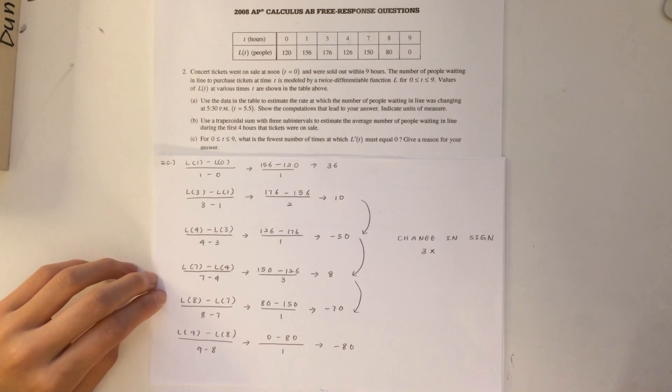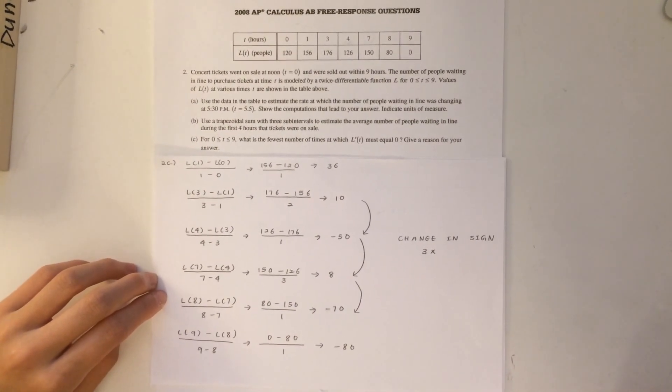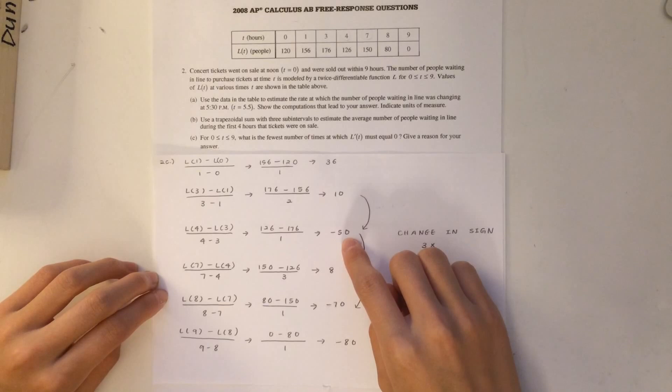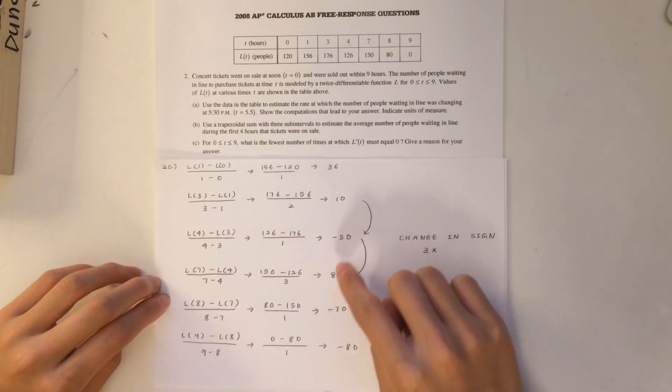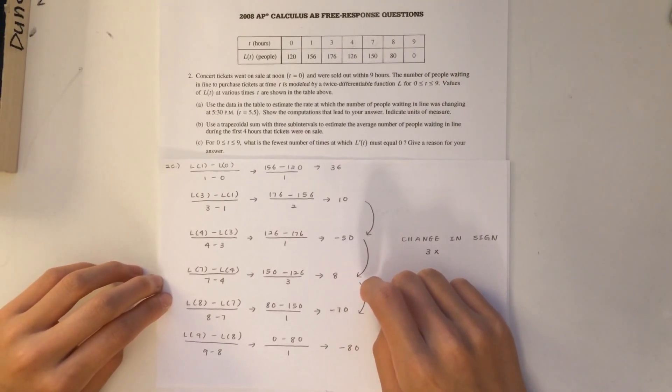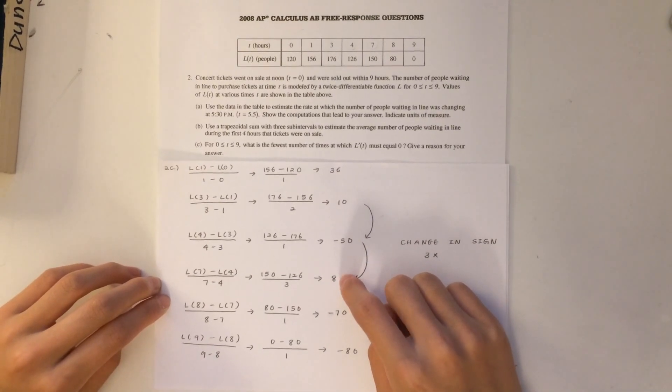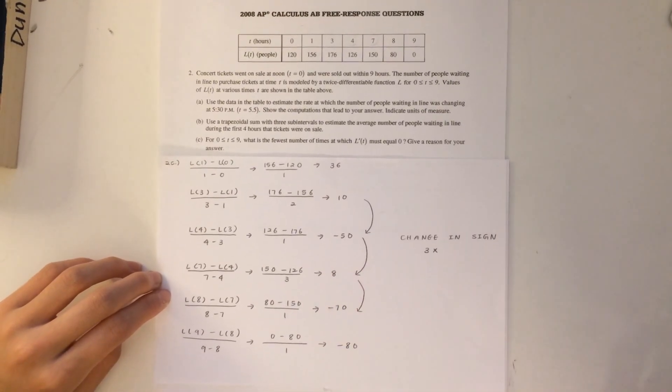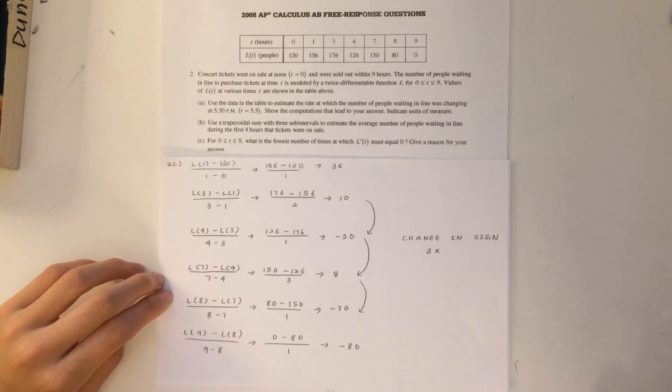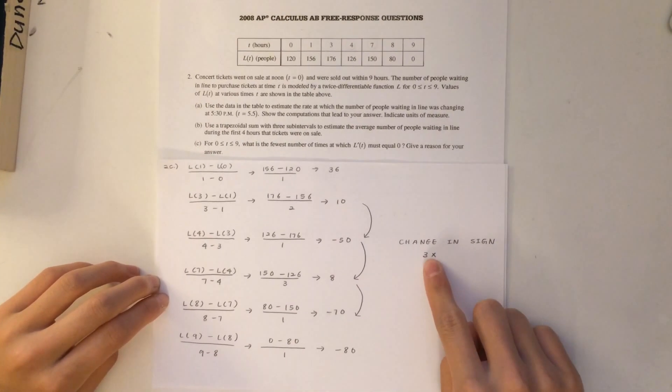The sign of l prime of t changes at t equals 3 from positive to negative, also at t equals 4 from negative to positive, and finally at t equals 7 from positive to negative. Thus, by the IVT, l prime of t equals 0 at least 3 times.